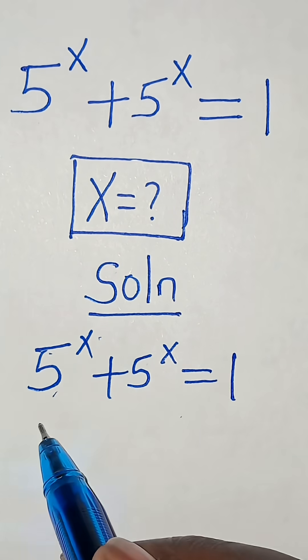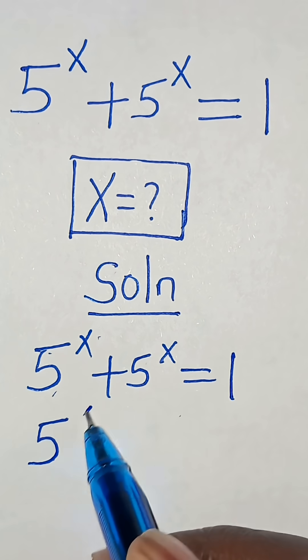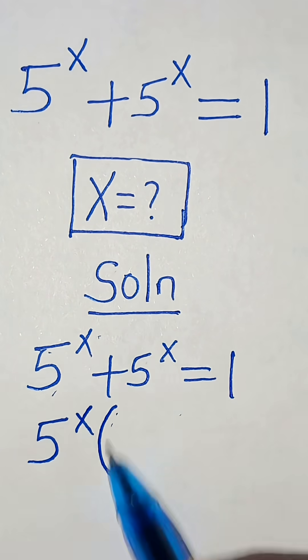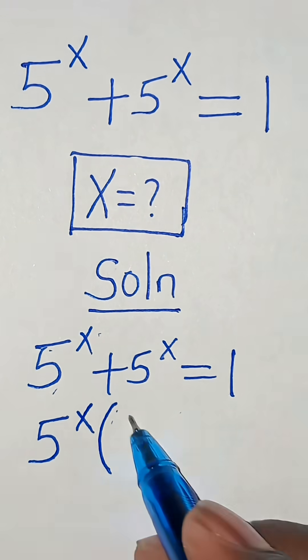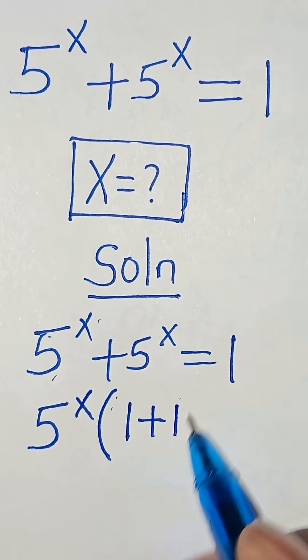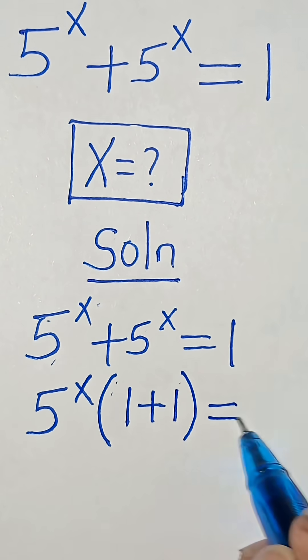5 to the power of x is common here, so we can factor out 5 to the power of x. Into the parentheses, this is 5 to the power of x divided by 5 to the power of x, which is 1, plus 1. This is equal to 1.